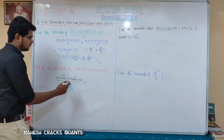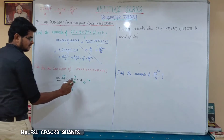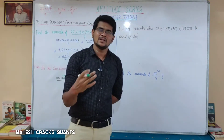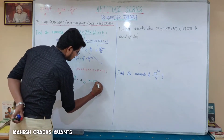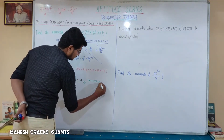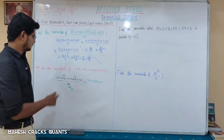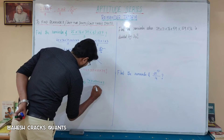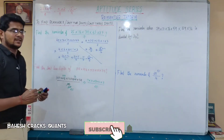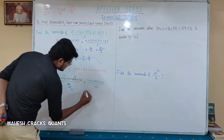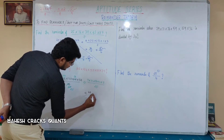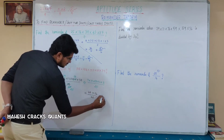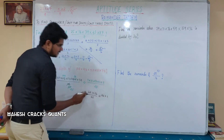107 divided by 25: remainder 7. Again, 107 divided by 25: remainder 7. 713 divided by 25: 100 multiplied by 25, remainder 13. 52 divided by 25: 26 divided by 25, remainder 1. And 77 divided by 25: 3 times of 25 is 75, remainder 2. Now 7 into 7 is 49. 13 into 2 is 26, 26 divided by 25 remainder 1 — using negative remainder that is minus 1, which changes to 24.